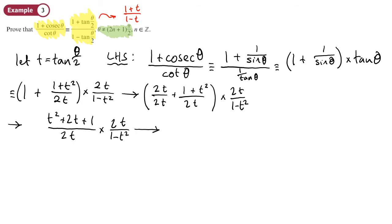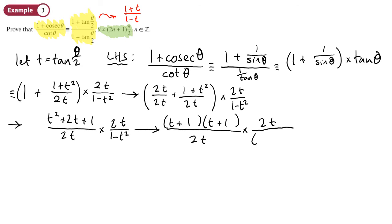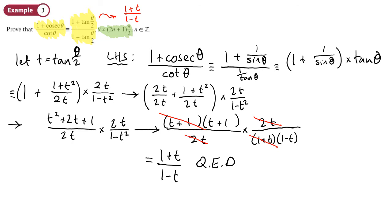To multiply this, we write the 1 with the same denominator as the first fraction: 2t over 2t. So we get (2t plus 1 plus t squared) all over 2t, times 2t over 1 minus t squared. Factorising, the top of the first fraction is (t+1)(t+1) over 2t, and 1 minus t squared is the difference of two squares: (1+t)(1-t). The 2t cancels and so does (1+t), giving us 1 plus t over 1 minus t, as required.